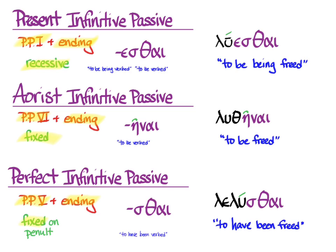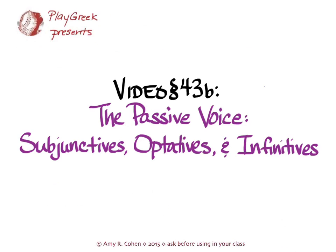As for other forms of the perfect passive, you can use the dative of personal agent when you need to specify the doer of the action, but the genitive of personal agent still works. That concludes all the non-troublesome forms of the passive voice for the tenses and moods you know so far. You're ready to tackle drills and all the uses for the subjunctive, optative, and infinitives — and now you can do them in the passive.